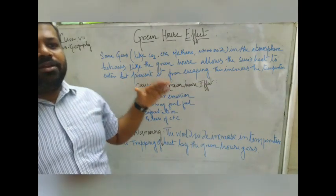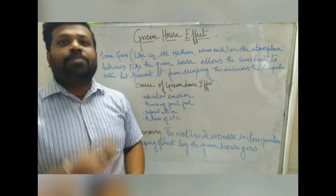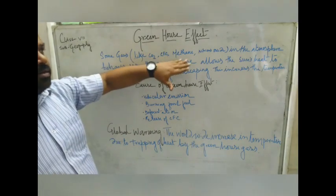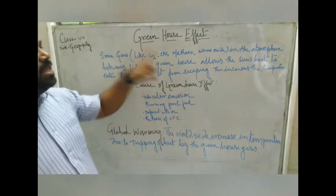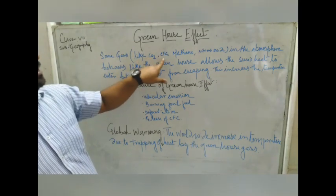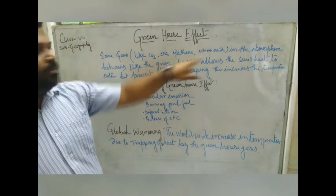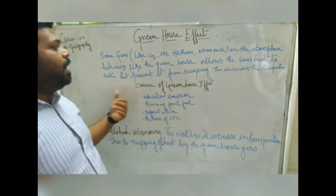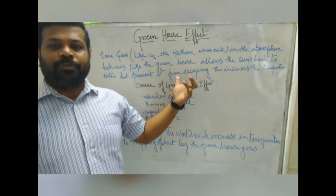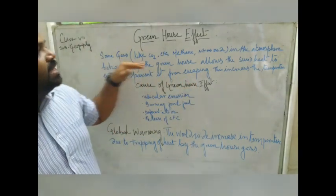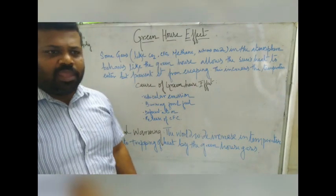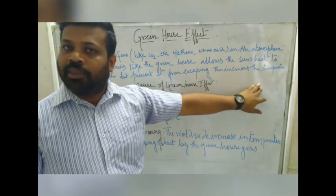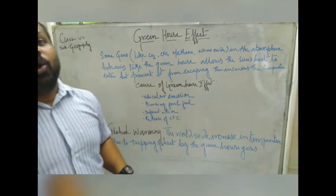Just like a greenhouse where heat can enter but cannot escape, here also some gases in the atmosphere — like carbon dioxide, CFC, methane, and nitrous oxide — allow the sun's heat to come in but prevent it from escaping. These gases are called greenhouse gases. As a result, the temperature in the atmosphere is increasing. This effect is called the Greenhouse Effect.